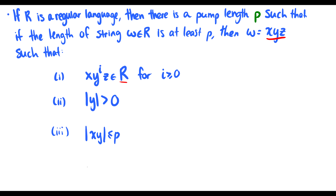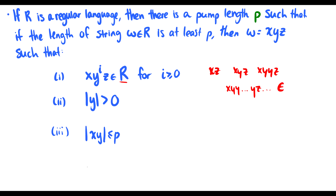Let's go over this in more depth. The first part says that whatever y we take, x z is going to be in R, x y z, x y y z, x followed by a bunch of y's and then z — so on and so forth — and those will always be in R. But we have to start with a string x y z that's already in R.